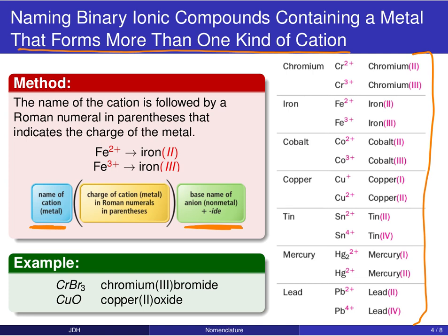We use Roman numerals in parentheses to denote the charge of that cation. So if I had a cation that was Fe2+, I would write this out as iron(II). If it was Fe3+, I would write it out as iron(III). What you need to be able to do is look at a chemical formula and determine the charge.